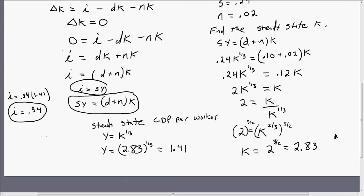Okay. And we could get consumption per worker. By using this equation, which I illustrated in another video, showed you how to solve that. So S is 0.24, Y is 1.41.